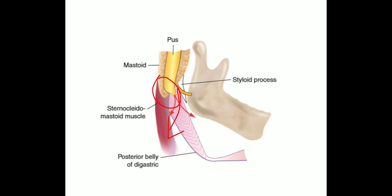Bezold's abscess has various tracks: it may lie deep to the sternocleidomastoid, pushing the muscle outwards; it may follow the posterior belly of the digastric and present as a swelling between the tip of the mastoid and the angle of the jaw; or it may lie in the posterior triangle. The patient presents with pain, fever, tender neck swelling, and torticollis. Investigations include high-resolution CT scan of the temporal bone along with ultrasonogram of the neck. Treatment includes IV antibiotics, drainage of abscess, followed by cortical mastoidectomy. Other named abscesses include Luc's abscess — deep to the bony external auditory canal due to a break in the bony wall between the antrum and the ear canal — and Citelli's abscess.